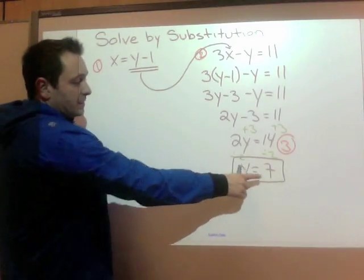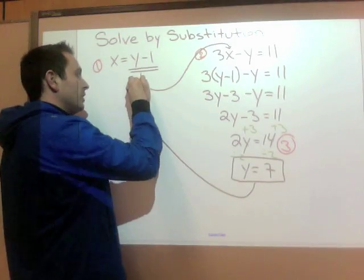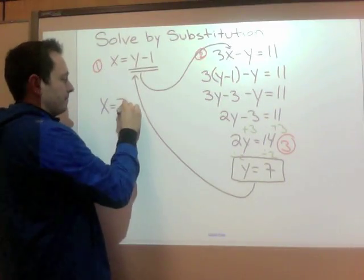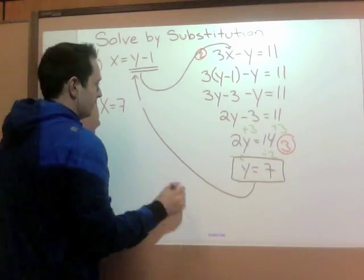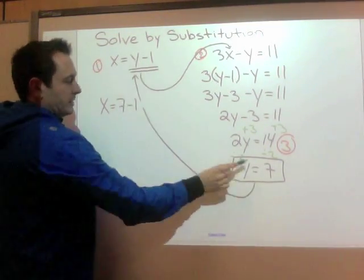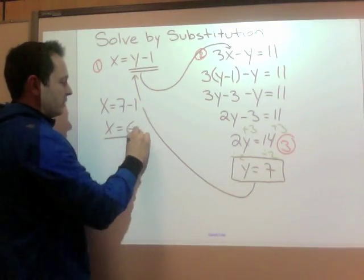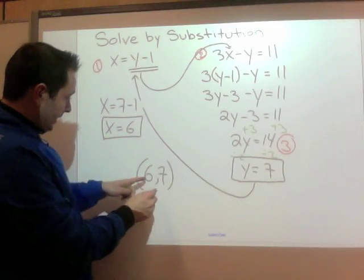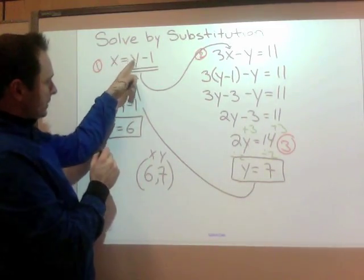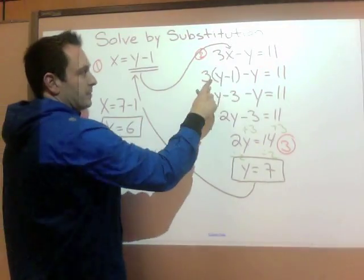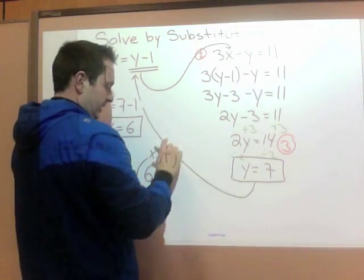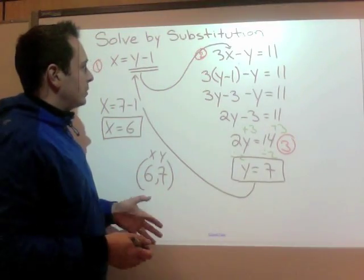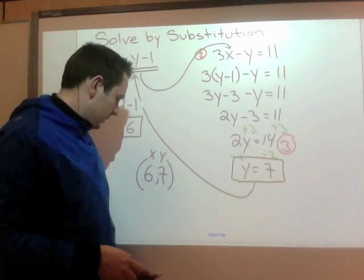Step 4. This value goes back into the original isolated term. So x equals y minus 1. So x equals y turned into a 7. So the y turned into a 7. 7 minus 1 is 6. So I have my x coordinate, my y coordinate. My answer is 6, 7. And again, you can test this. If x is 6, y is 7, 6 equals 7 minus 1. Yes, 6 equals 6. And then try up here. What happens if I put a 6 in here? Well, 3 times 6 is 18. 18 minus 7 is 11. 11 equals 11. Good. I did a little mental check there without having to write up my check. So what we'll do is we'll see one other example where the first step isn't isolated for us.